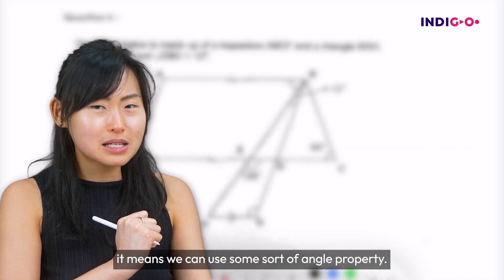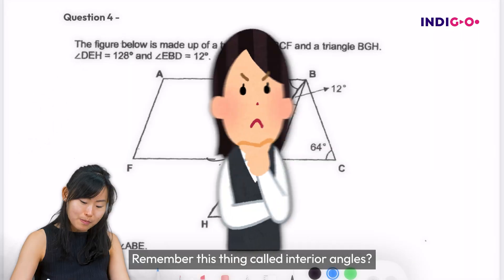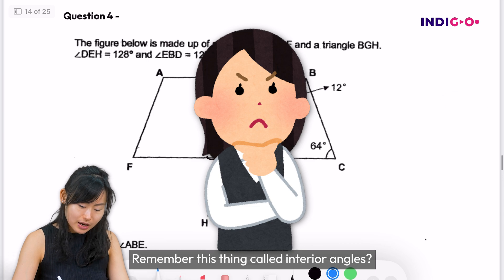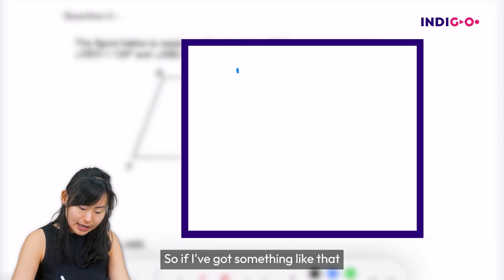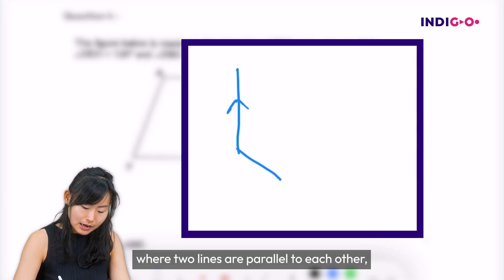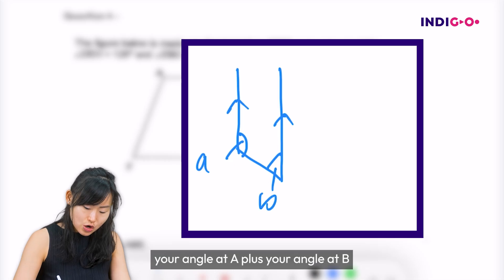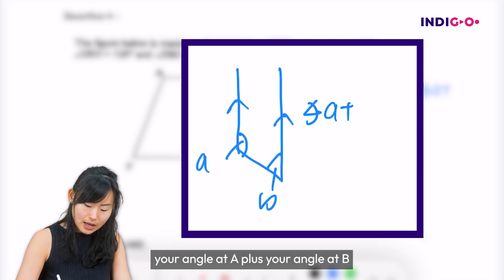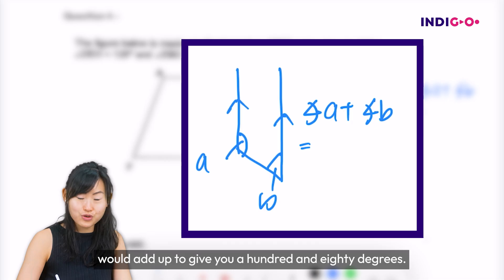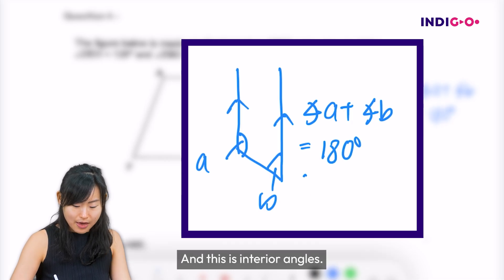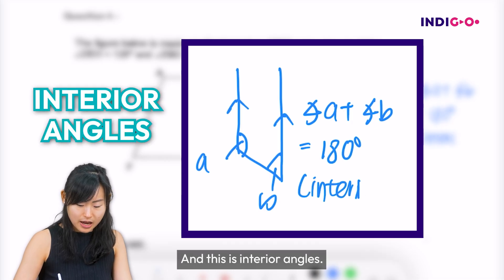Since they're parallel, it means we can use some sort of angle property. Remember this thing called interior angles? So if I've got something like that where two lines are parallel to each other, then let's call this angle A and this angle here B, your angle at A plus your angle at B will add up to give you 180 degrees and this is interior angles.